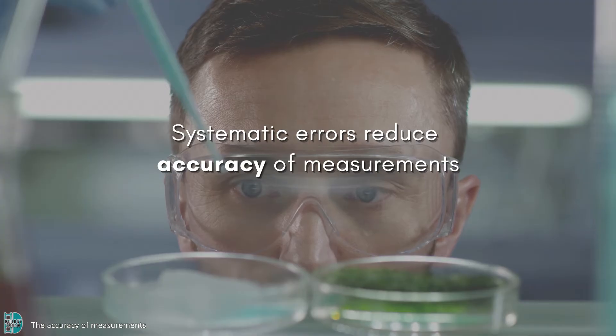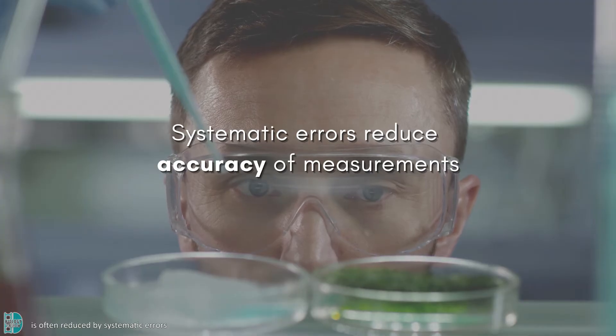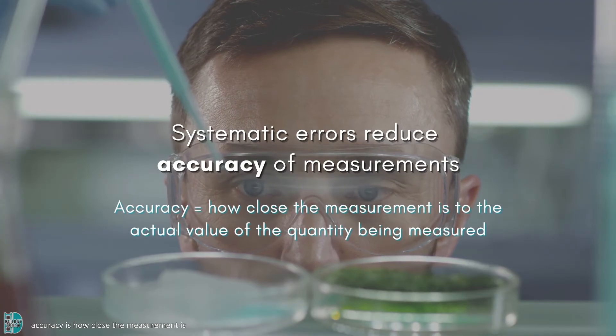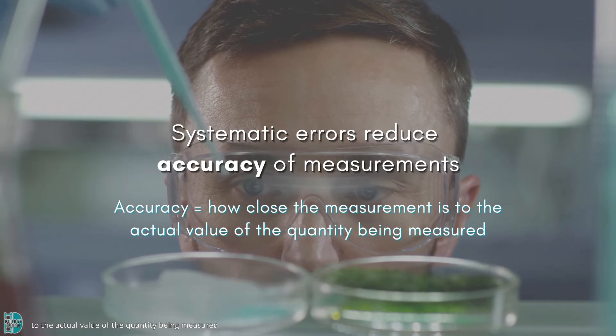The accuracy of measurements is often reduced by systematic errors. Accuracy is how close the measurement is to the actual value of the quantity being measured.